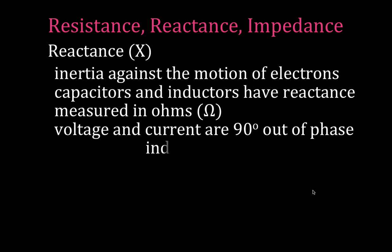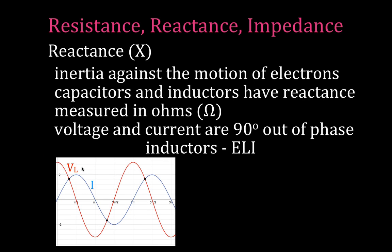For inductors, it's going to be the opposite. We use the mnemonic ELI — some people say ELI the ICE man — to remember that the voltage leads the current by 90 degrees for an inductive circuit. That gives us this form for our voltage curve and current curve. You can see the voltage peak occurs 90 degrees — pi over 2 radians — before the current peak. That gives us this phasor diagram where we have the voltage across the inductor ahead of the current by 90 degrees.